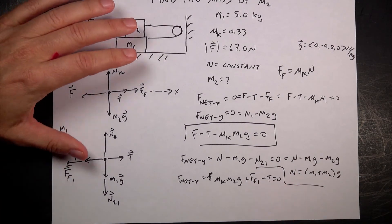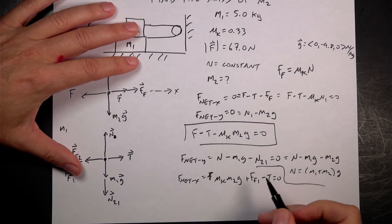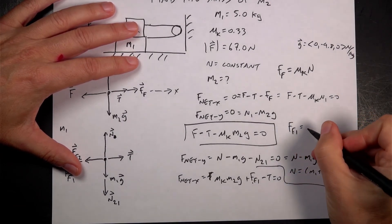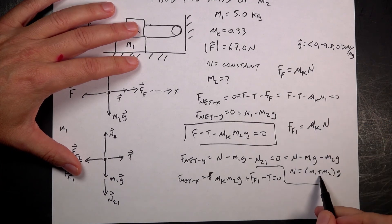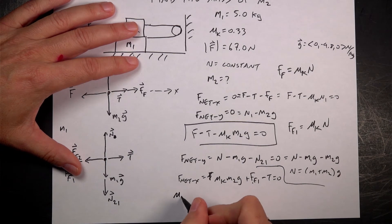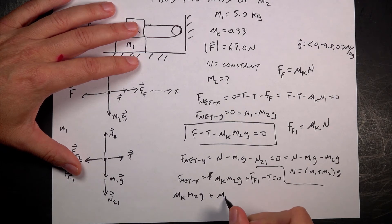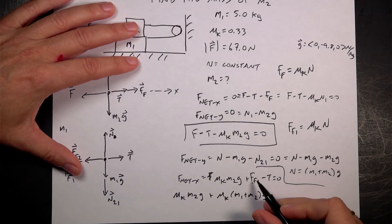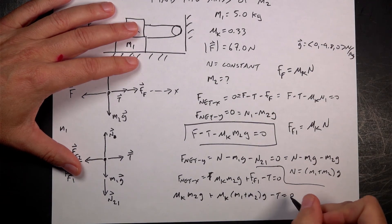I'm running out of room, but I think I don't want to start a new page because I'm almost done. Now I can put in FF1 is going to be mu K times N, but N is M1 plus M2G. So I get mu K M2G plus mu K (M1 + M2)G minus T equals 0.